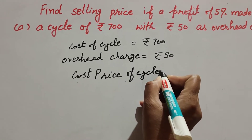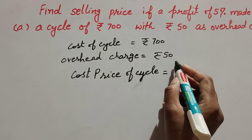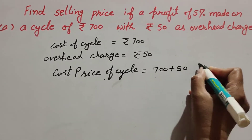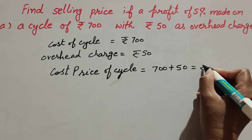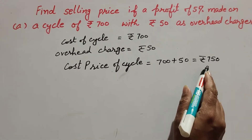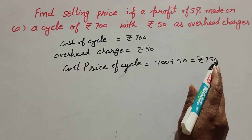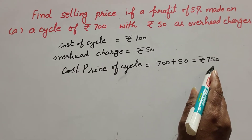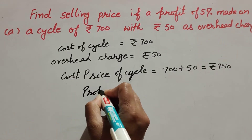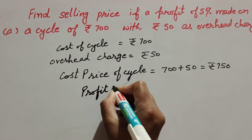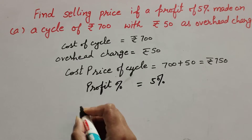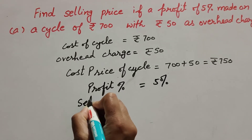Cost price of cycle is equal to 700 plus 50, so it is equal to rupees 750. This is the cost price of the cycle. The profit percentage is also given — profit percentage is 5 — so now we find its selling price.